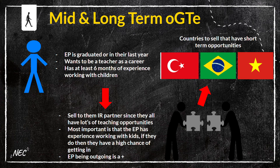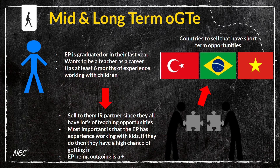For mid and long-term OGTE — the most popular persona — these EPs are graduated or in their last year, want to be a teacher as a career, and have at least six months of experience working with children or teaching. It's very important to sell them IR partners since they have many teaching opportunities; we have strong communication with IR partners and know they have quality placements available. Experience working with kids is essential — without it, even short-term applicants have a very high chance of rejection. Even daycare counts for short-term, but for long-term career applications, solid teaching experience is important. The EP should also be outgoing and talkative to interact well with students.